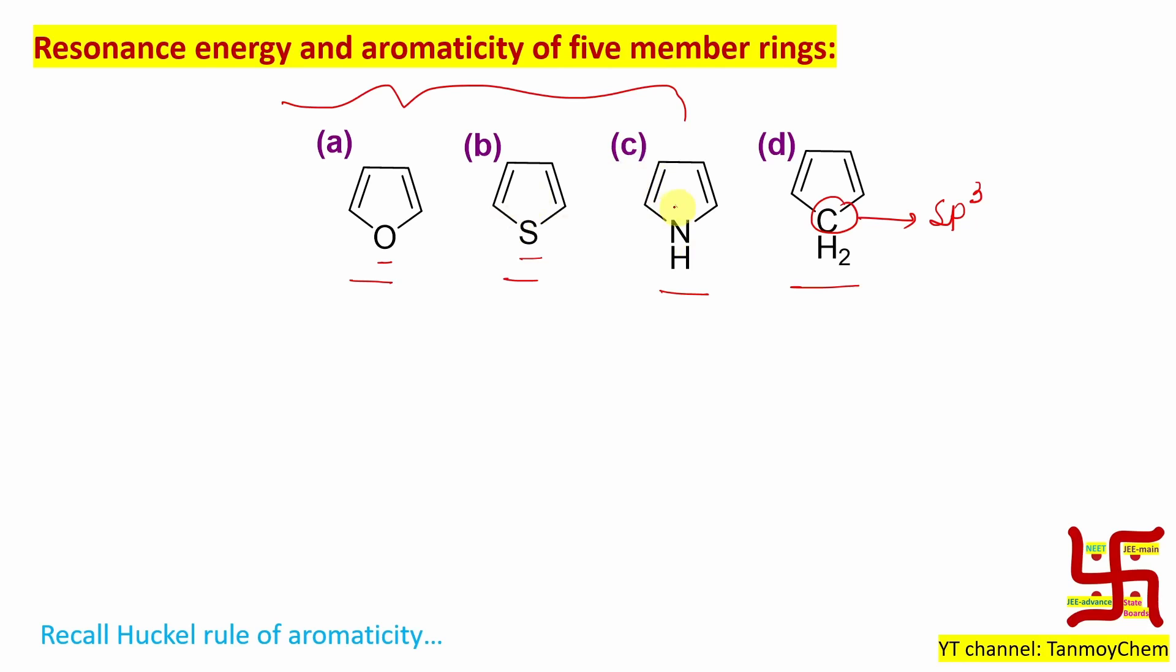Nitrogen has one lone pair of electrons. Sulfur has two, and oxygen has two. Any one particular lone pair is involved in aromaticity and delocalization.